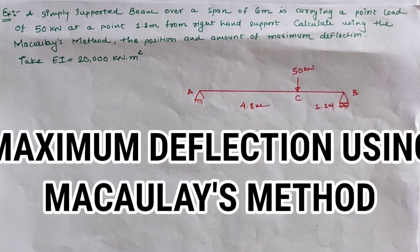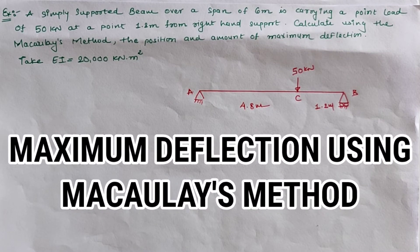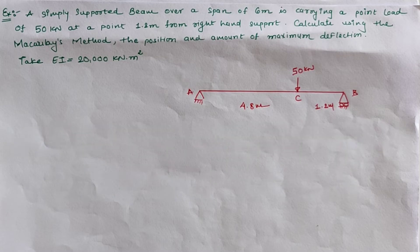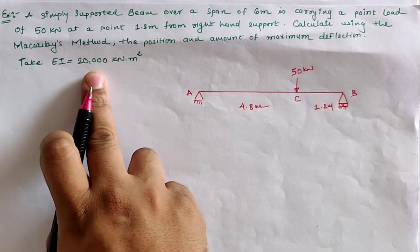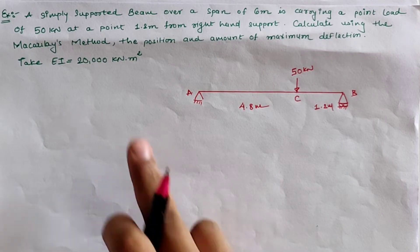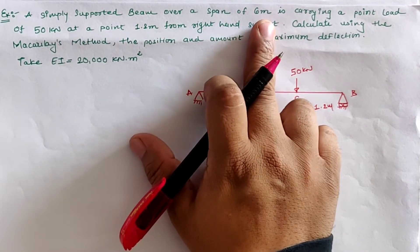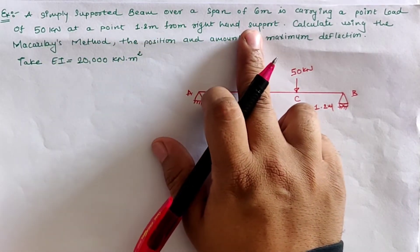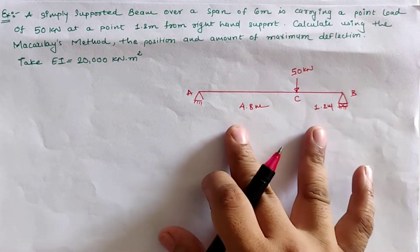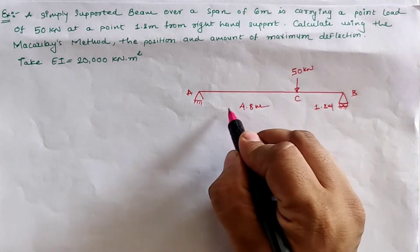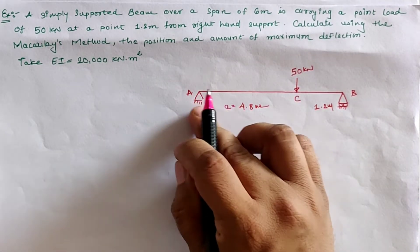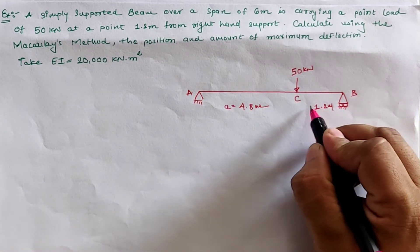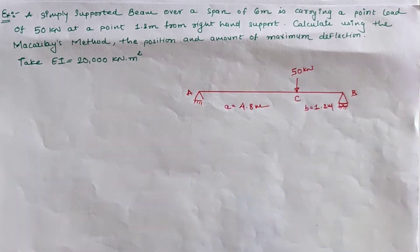Hello friends, today we are going to analyze the given simply supported beam using Macaulay's method for the position and amount of maximum deflection. The flexural rigidity EI is 20,000 kilo Newton meter square. We have a simply supported span of 6 meters carrying a point load of 50 kilo Newton at a point 1.2 meter from the right hand support. The distance from support A is 4.8 meter and from support B is 1.2 meter, with a total span of 6 meter.